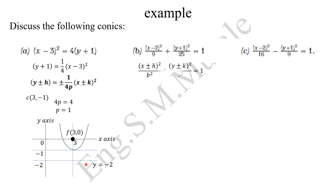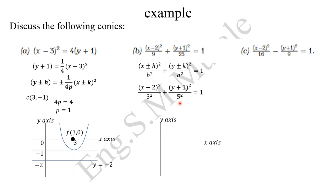For the second example, it's an ellipse. Looking at the standard equation, since the larger denominator is under the y-term, we identify a = 5 and b = 3. From the equation we can determine the new center, which is (2, -1). Once we have the center, we determine the major vertices — since a is bigger than b, the ellipse stretches in the y-direction.